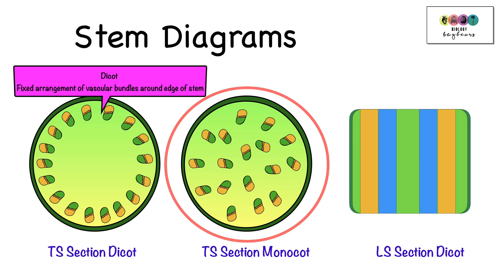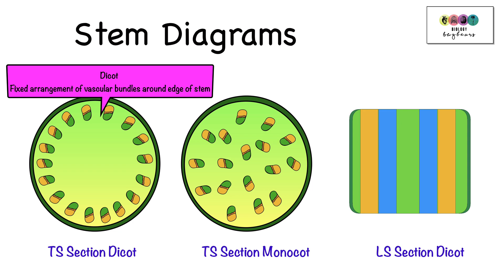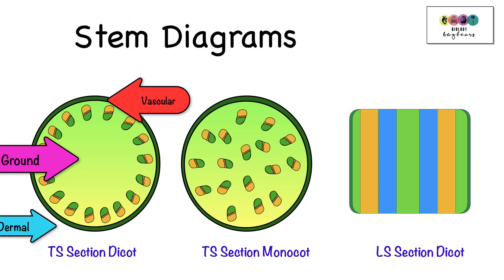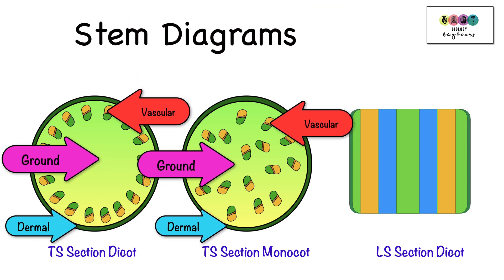However, there is a fixed arrangement in the dicot stem around the edge. How would you know that these were stems and not roots? Well, the presence of those vascular bundles. So now add in those labels. Start from the outside and work your way in. Dermal, ground and vascular. Really straightforward and easy marks.